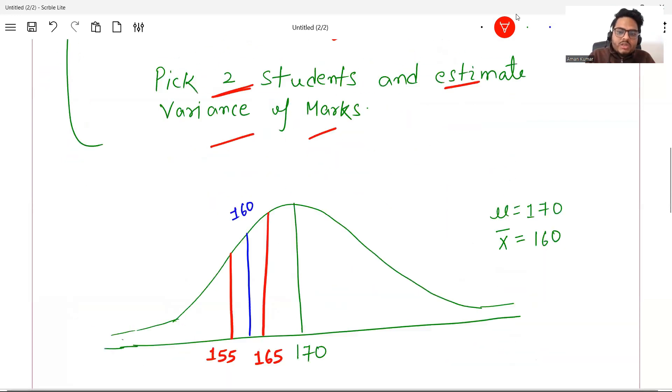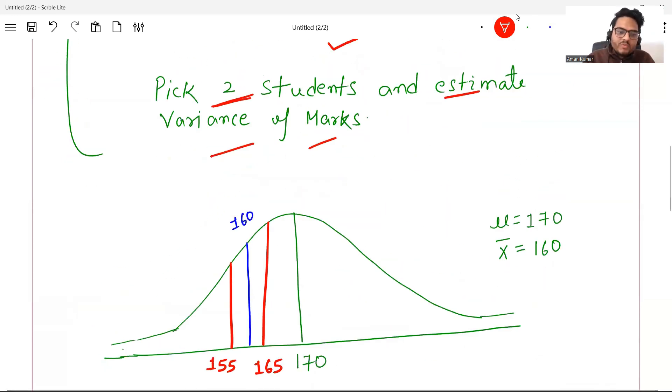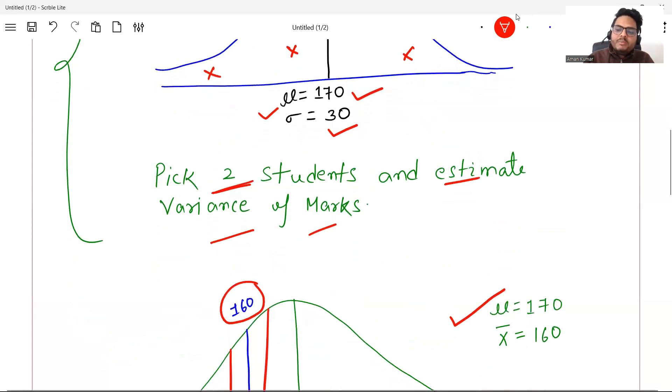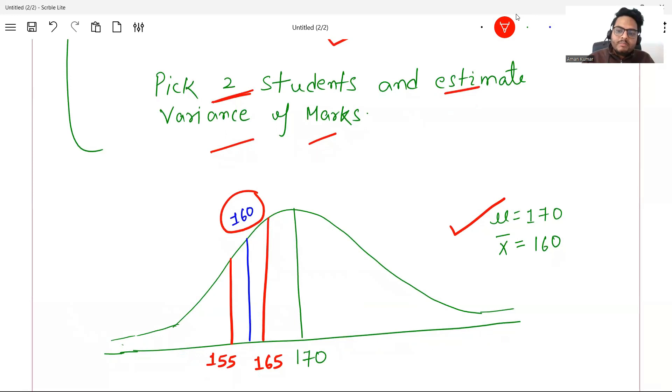Now let's say you took these two students. I have written everything today just to save some time. 155 and 165 is the marks of the student that you selected randomly. These two guys you selected. So what is their mean? 155 and 165, 160. Now you have two numbers in your hand. Mu, which is represented as population mean, is 170. Sample mean is represented by x bar. Here we have two students in the sample, so my sample mean is 160. 155 plus 165 divided by 2 is 160.